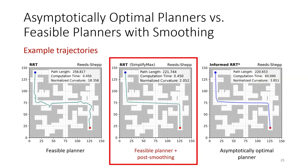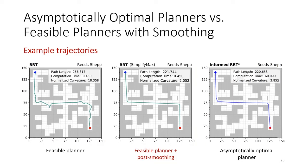For example, RRT using the post-smoothing algorithm SimplifyMax, shown in the center, achieves a smaller path length and about the same normalized curvature after less than one second, while informed RRT star, shown on the right, finds a solution after 60 seconds.